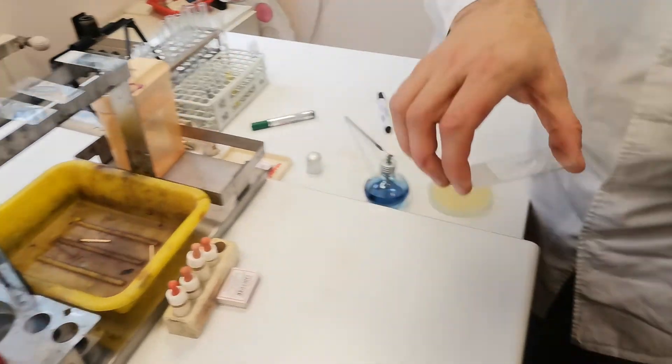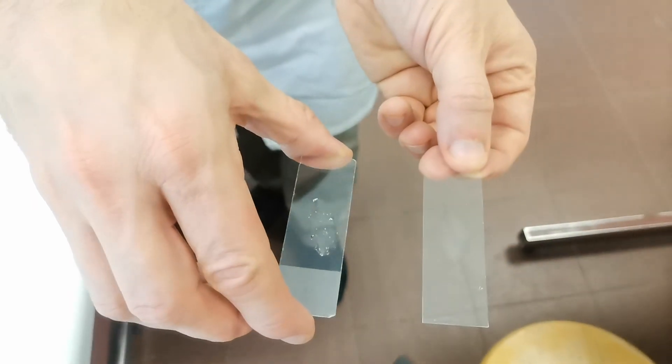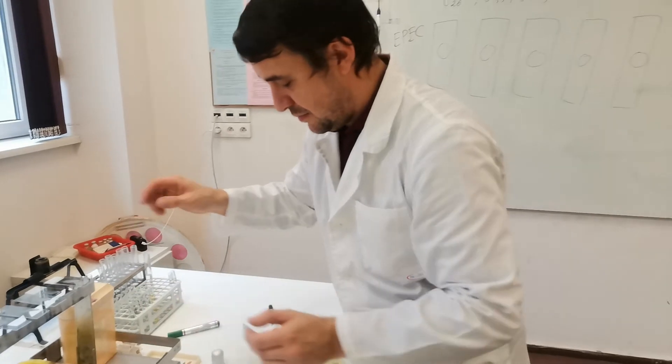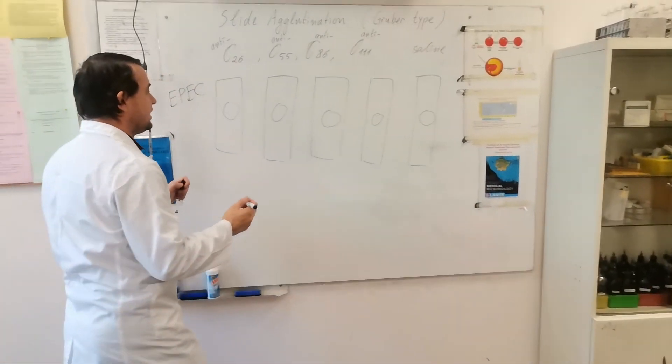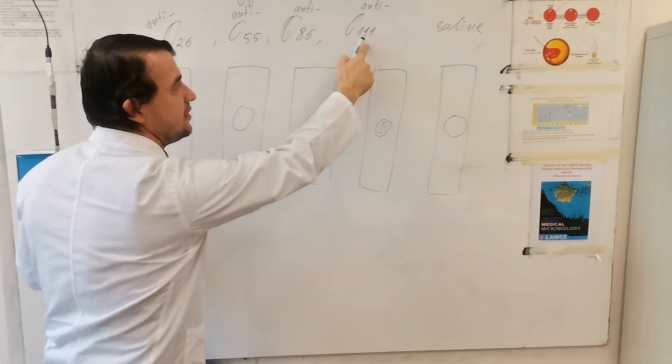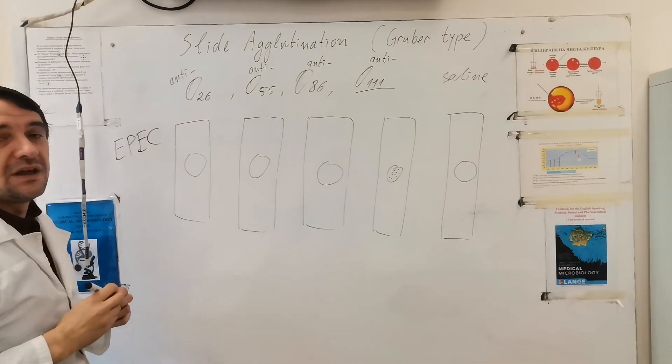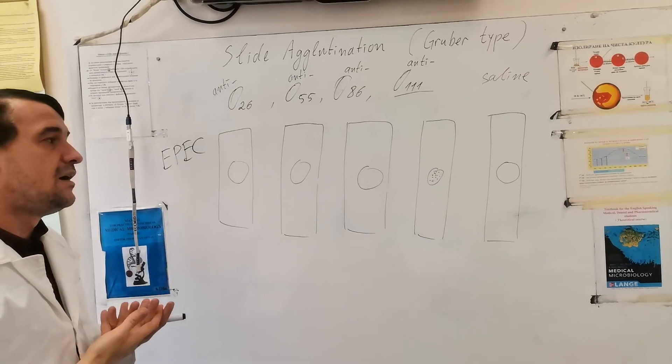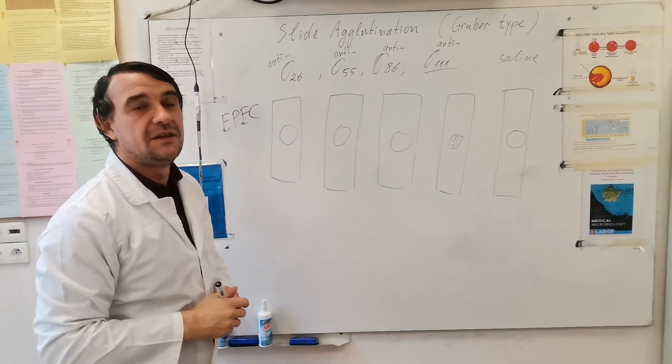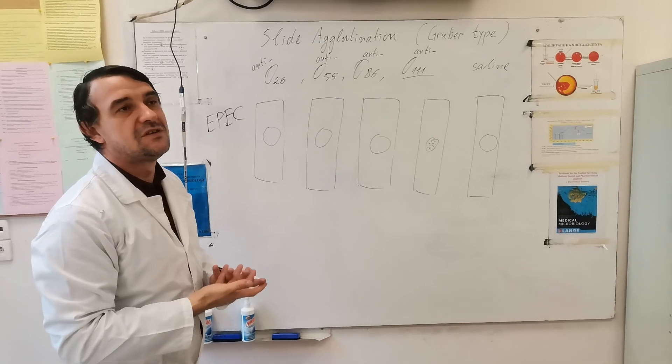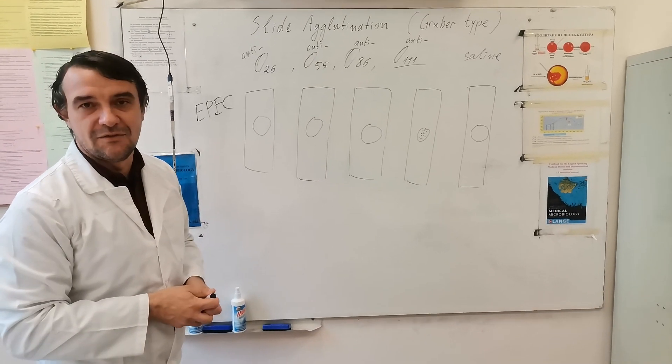Once again let's show you the difference between a negative and a positive reaction. You saw this Gruber type of agglutination within just several seconds. Here we have the fine grains only here in the drop with the serum against O111. That means our serotype of E. coli has been O111 and it should be reported as an enteropathogenic strain. The respective measures and therapy should be started. Thank you very much for your attention.